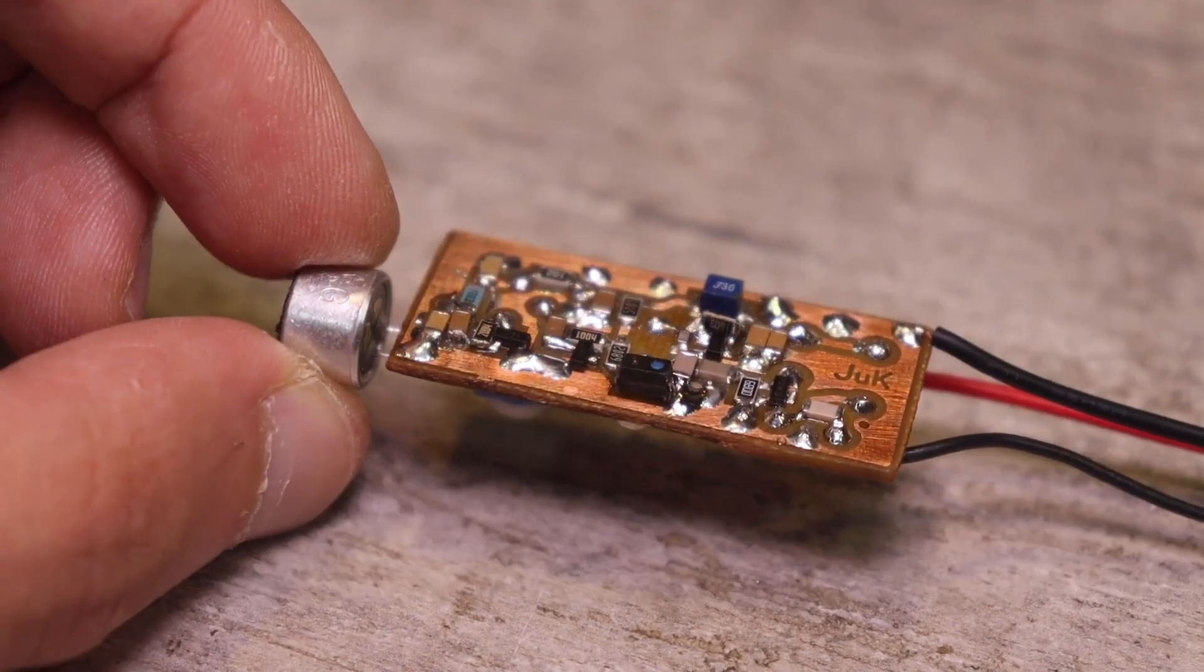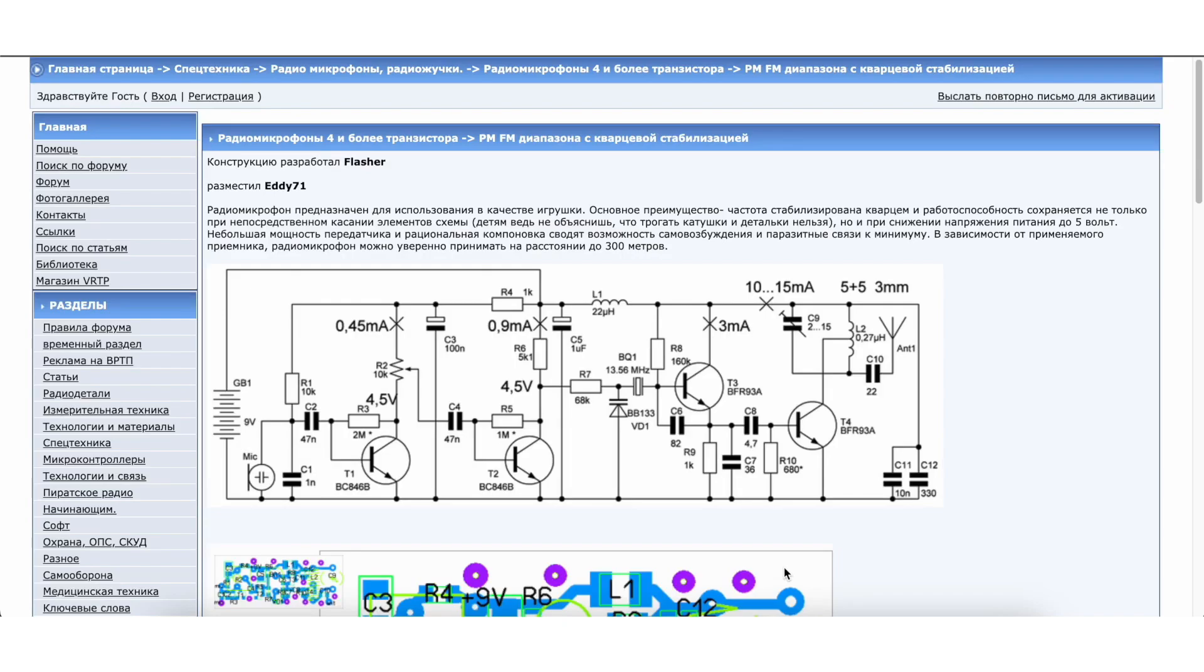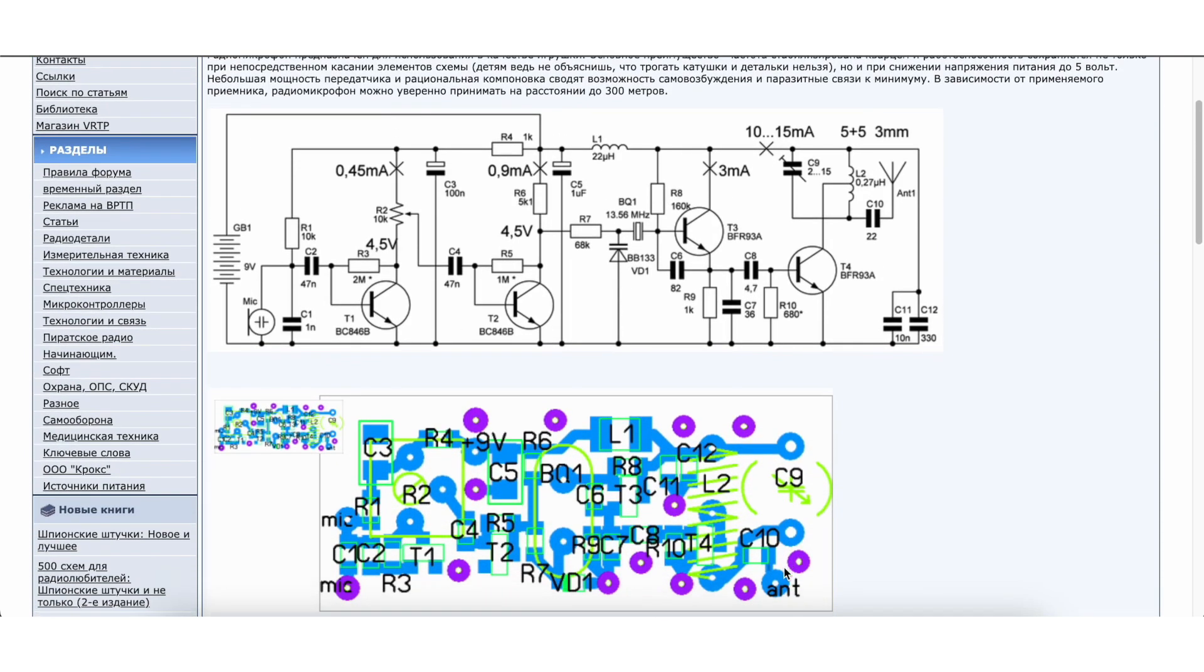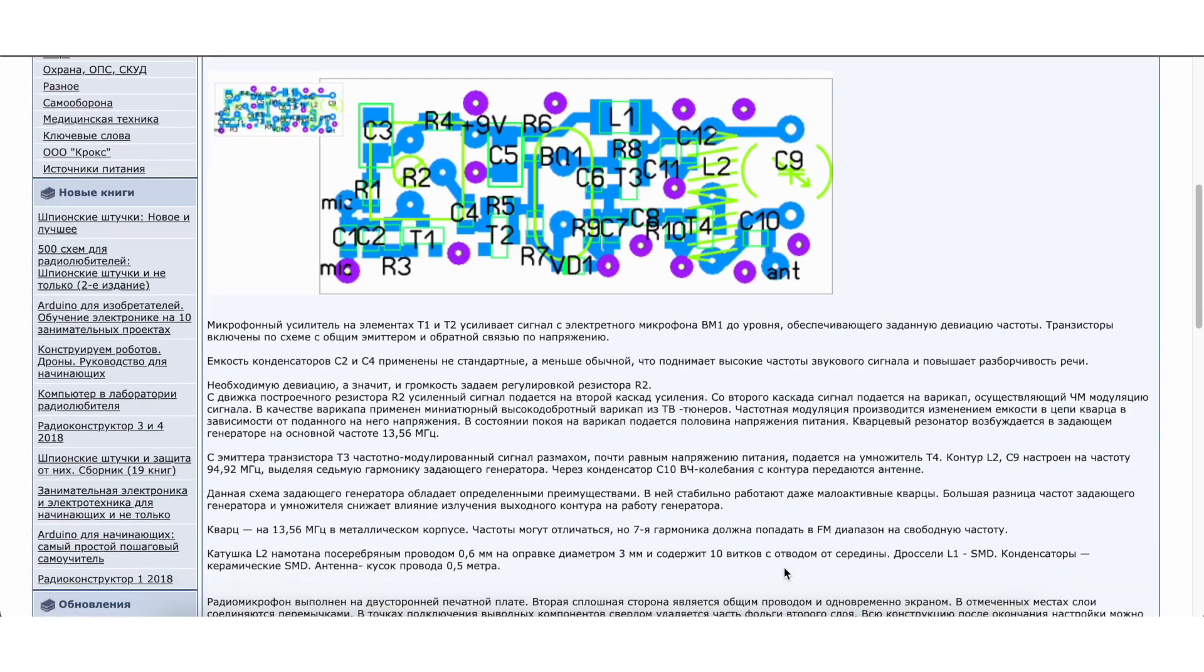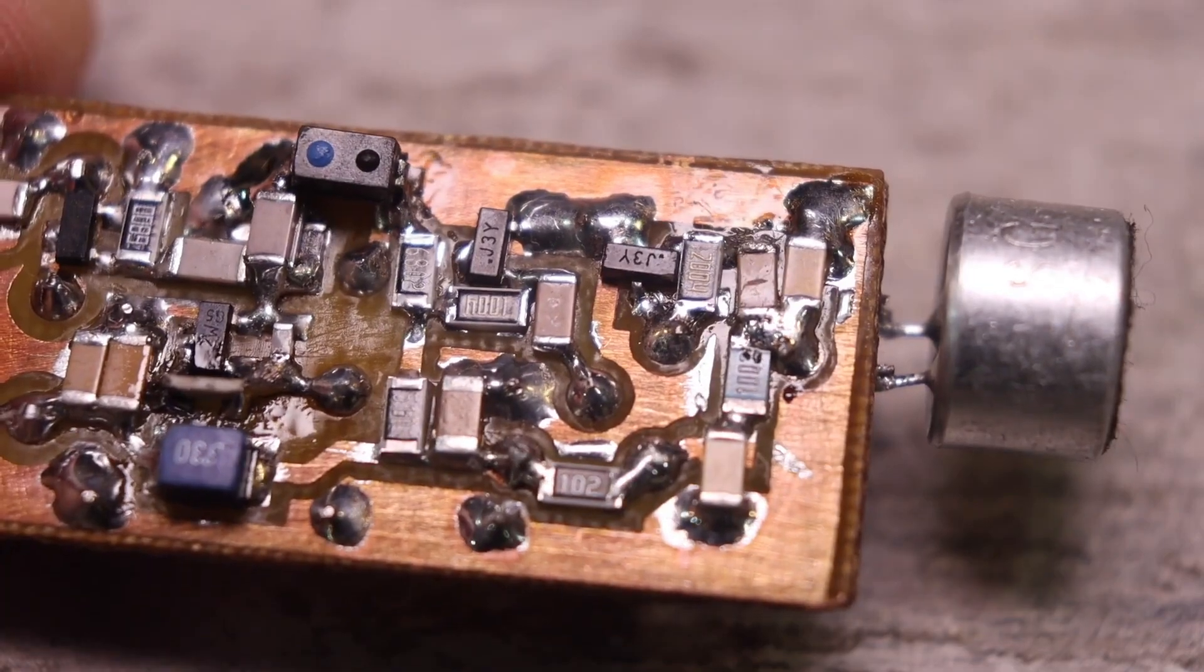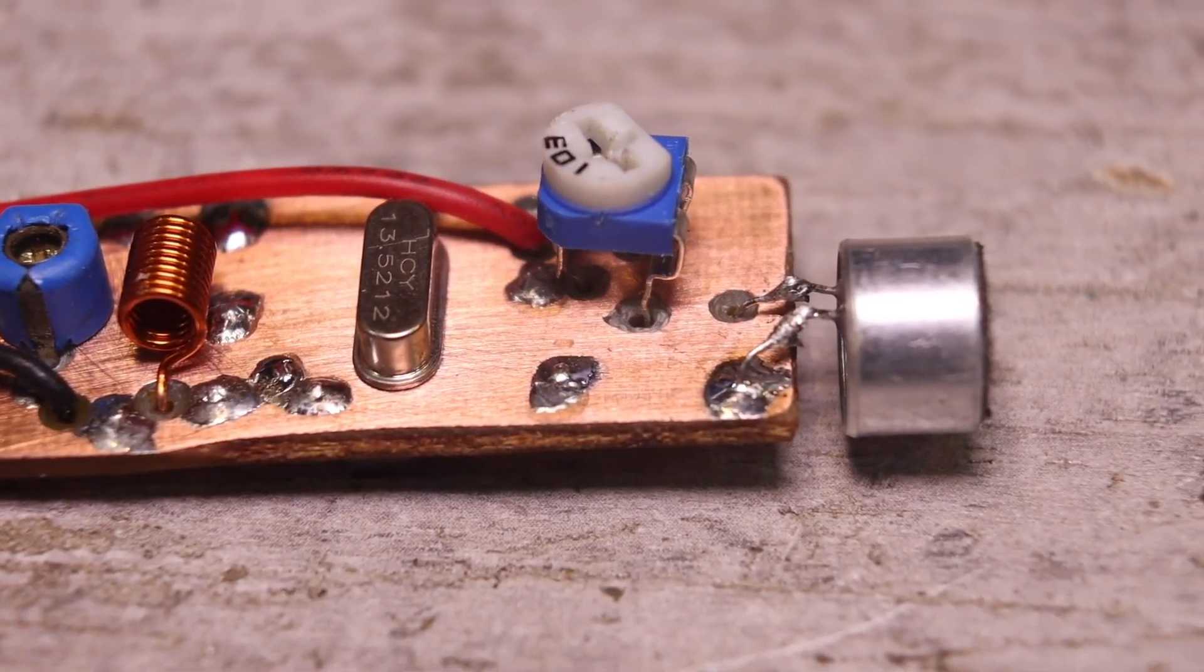Another video is coming to an end. In the description of the video you will find a link to the original source. There will be a diagram and a printed circuit board, again I will remind you, don't forget to mirror before printing. All the necessary links are in the description. Now I say goodbye until next time. With you, as always, was Kassian TV.